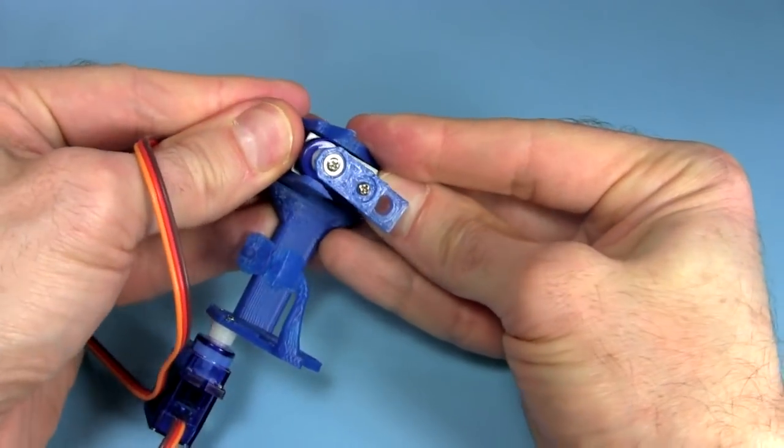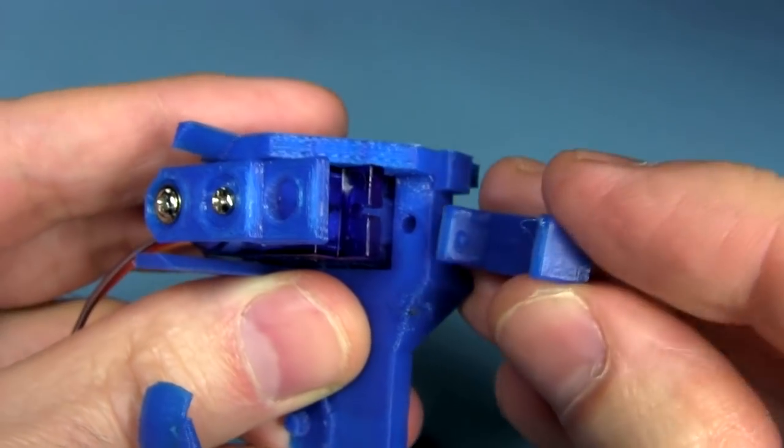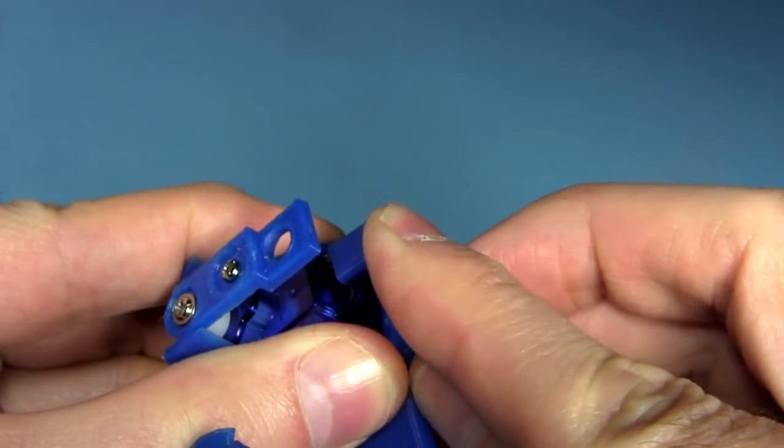It's a tight fit, as it should be, but I managed to get the servo in place. To hold the servo there, I made this clip with two knobs at either end inside. I snap it on.